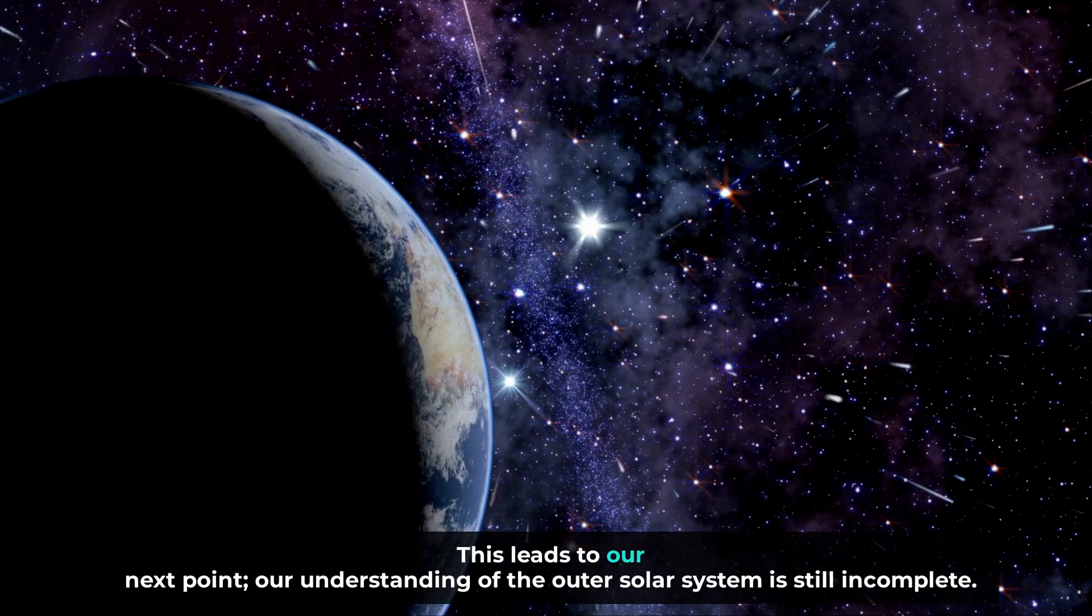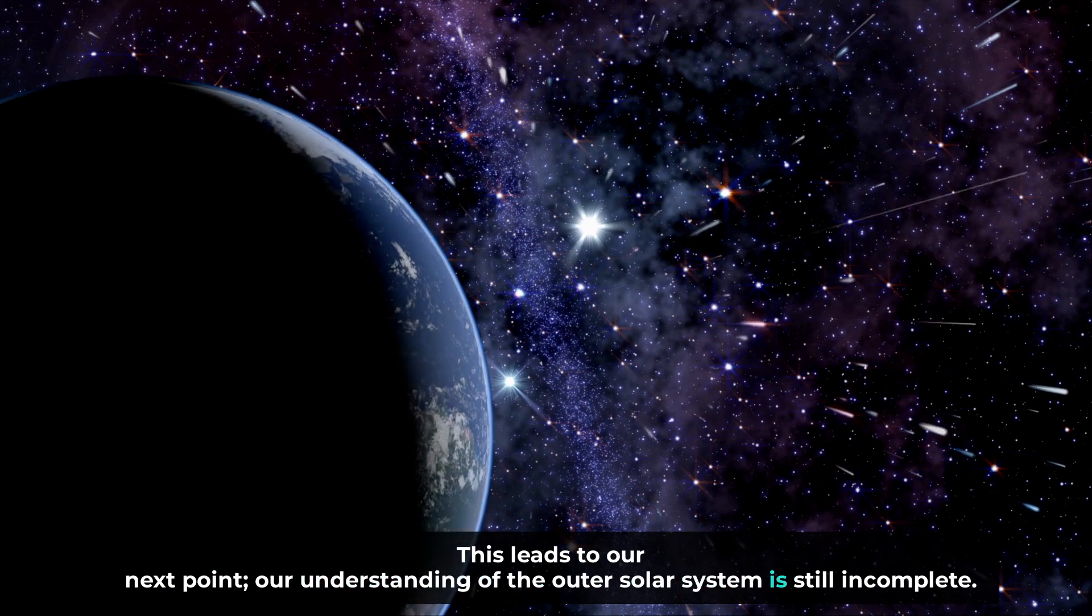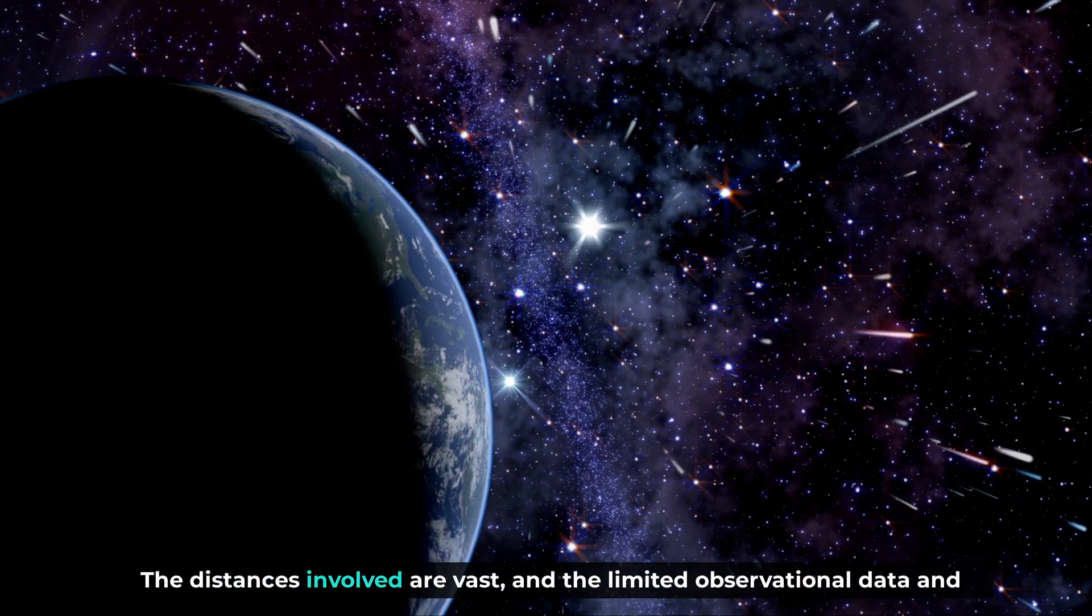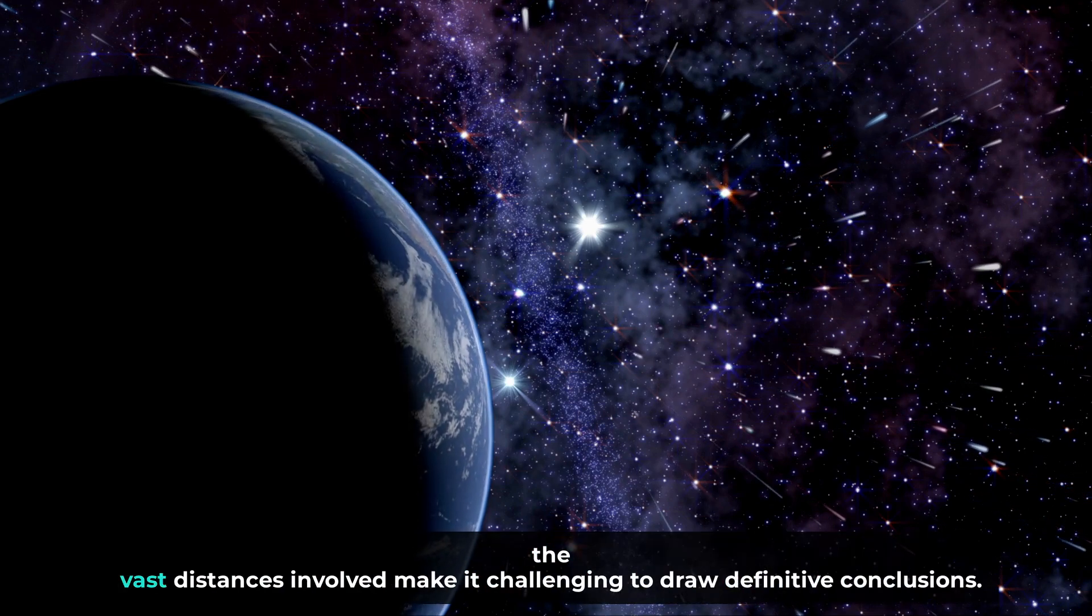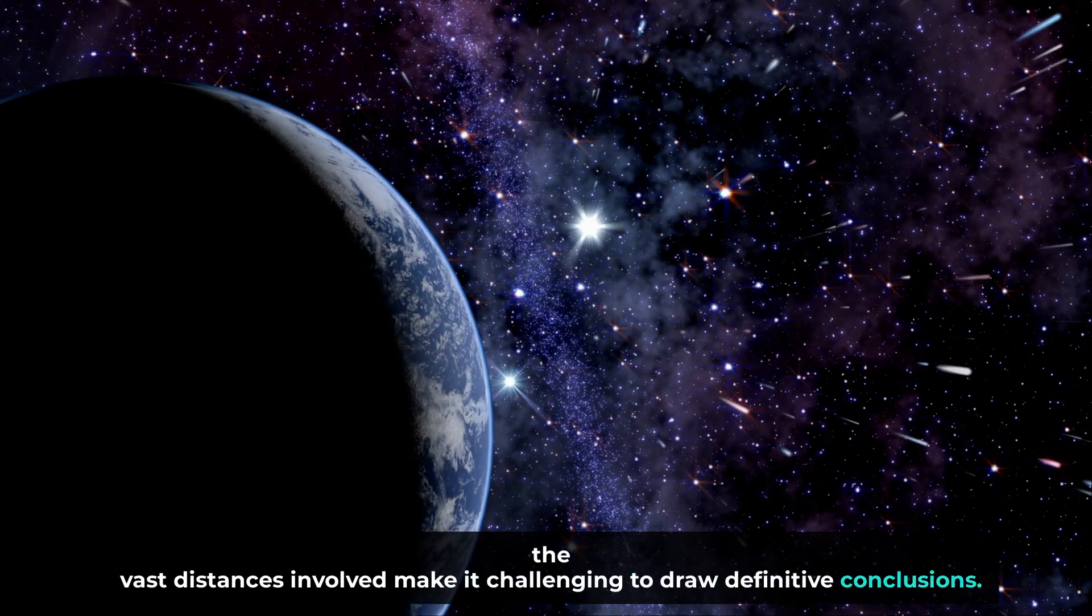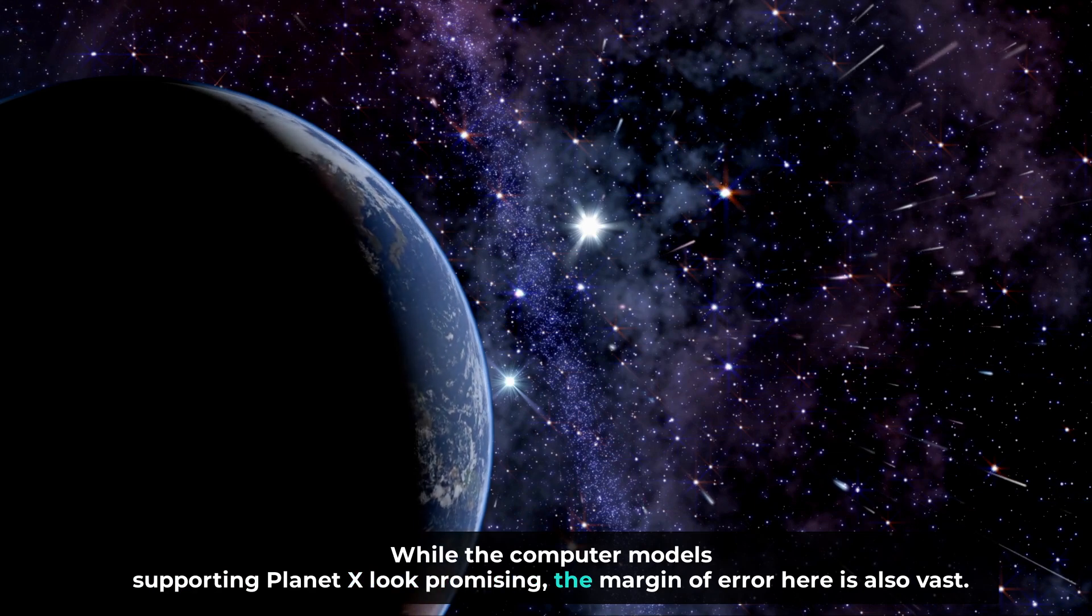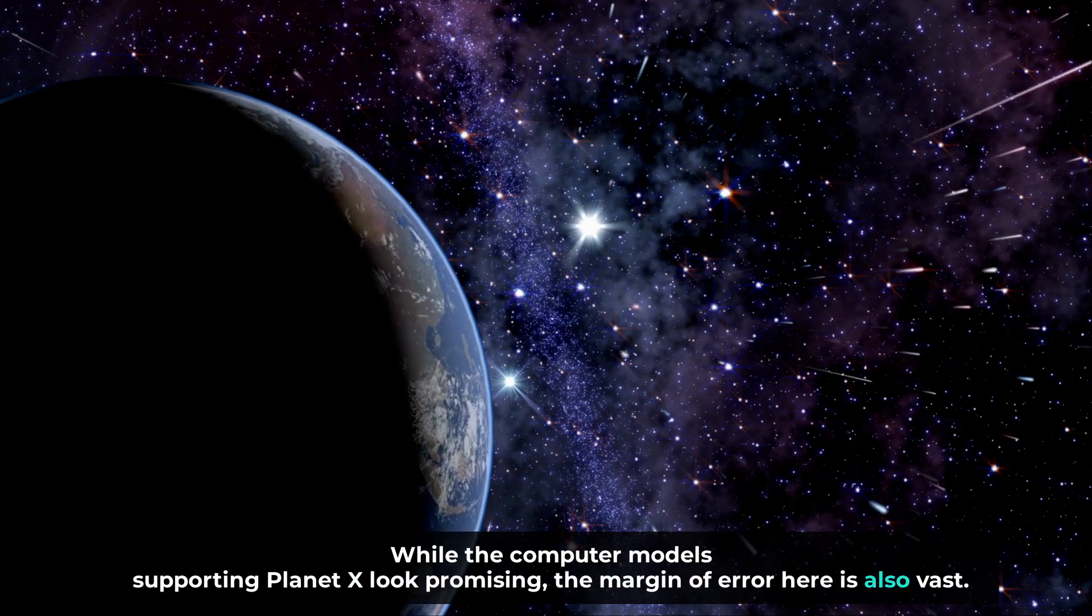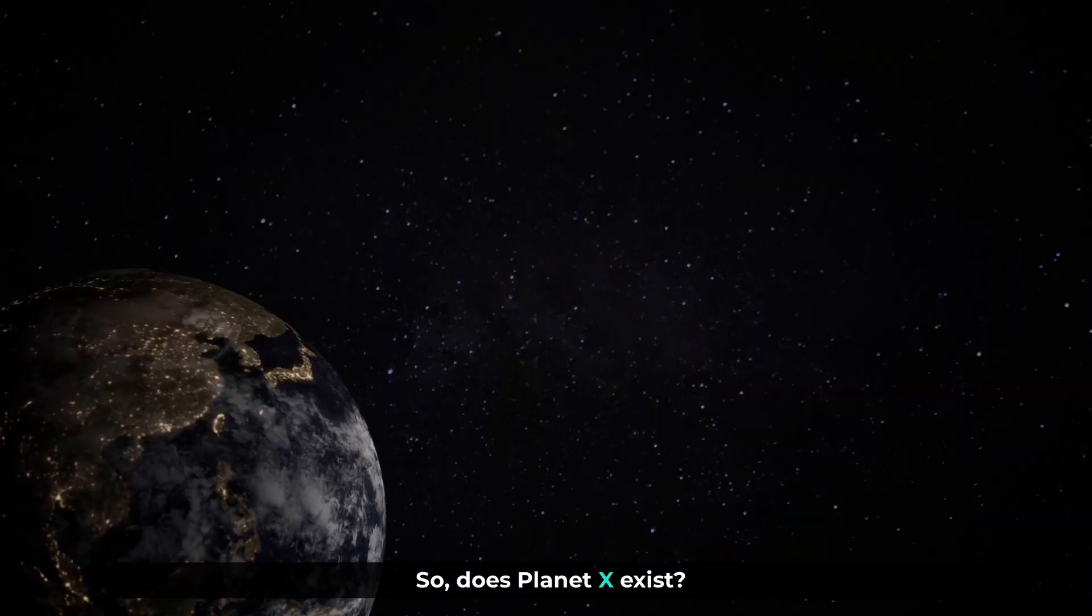This leads to our next point. Our understanding of the outer solar system is still incomplete. The distances involved are vast, and the limited observational data and the vast distances involved make it challenging to draw definitive conclusions. While the computer models supporting Planet X look promising, the margin of error here is also vast. If it's there, where is it? So, does Planet X exist?